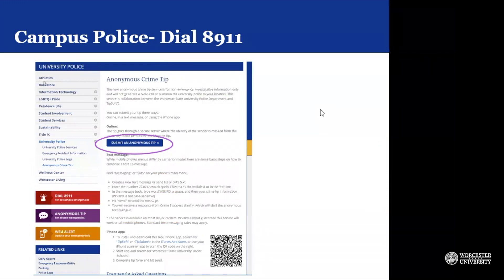Next, we have the campus police information, because I think it's important for all of you to know that you are able to submit an anonymous tip to our campus police if you think someone may have broken the law and it's a situation they should be aware of. At any time, please dial extension 8911 if you think you're in danger. Please know that our campus police has a community policing approach to law enforcement. They do 24-hour patrols on campus and they are the ones who take care of criminal investigations, which means those are the situations where someone has broken the law.